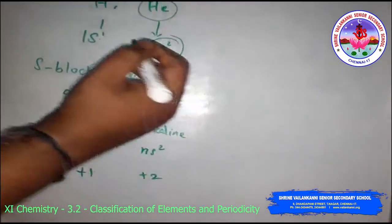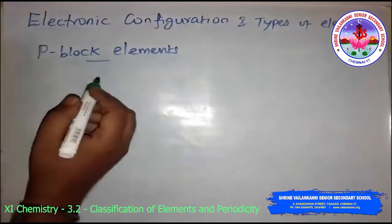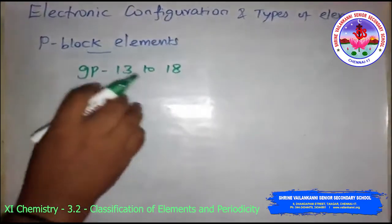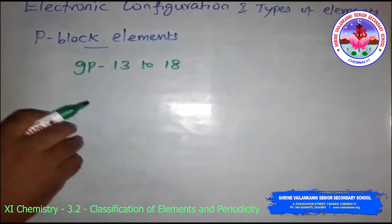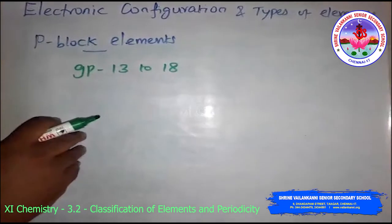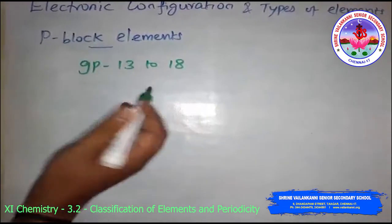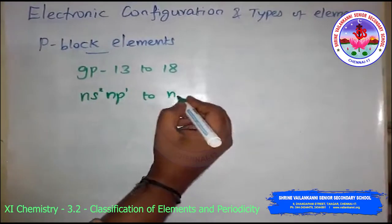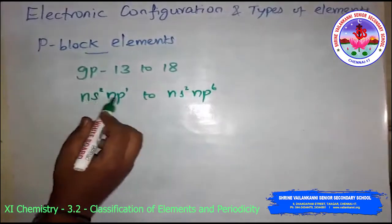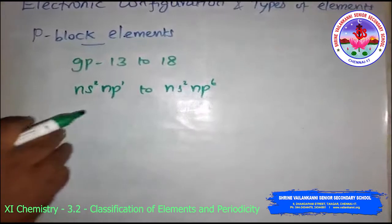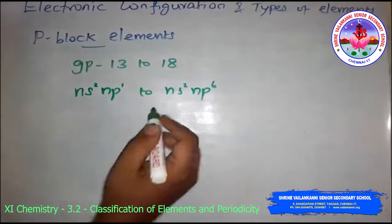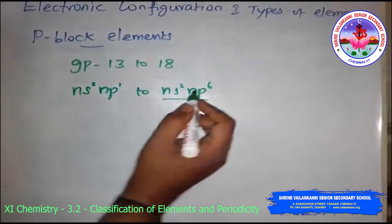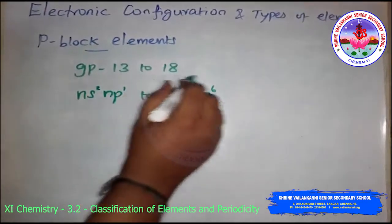The p-block elements comprise groups 13 to 18. These are called representative or main group elements. Their outermost electronic configuration varies from ns2 np1 to ns2 np6, corresponding to groups 13 through 18. At the end of each period are the noble gas elements with closed valence shells of configuration ns2 np6, making them inert. Their p orbitals are completely filled with electrons.